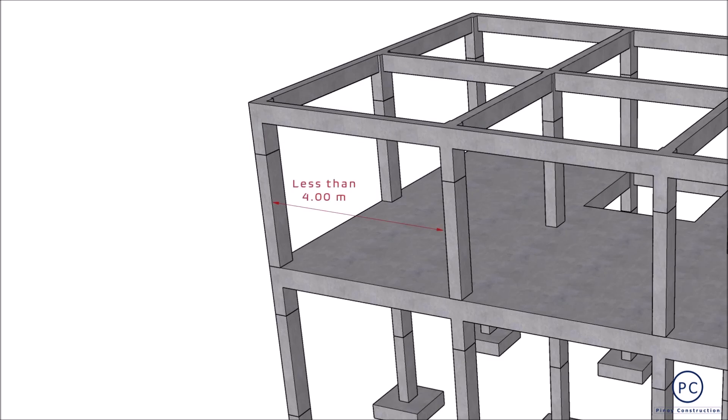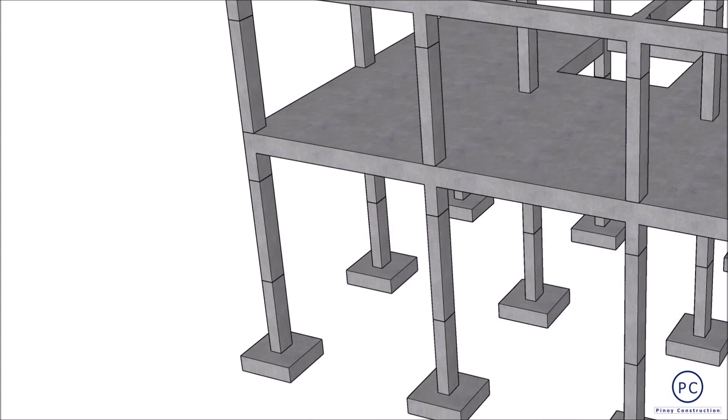Ganun pa man, ang recommended ay magkaroon ng column with a span distance not more than 4 meters and at every corner of the building. As much as possible, ang mga ito ay nararapat connected ng beams that can also act as lateral bracing. Ang recommended maximum unbraced height ng column naman ay dapat ma-i-limit to less than 4 meters. Ang malaking unbraced height ay nagpapataas sa slenderness at nagiging dahilan ng increased buckling behavior.